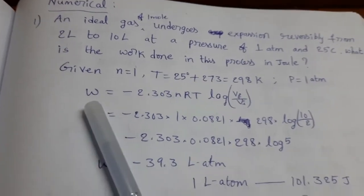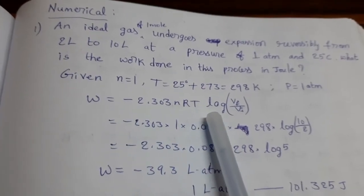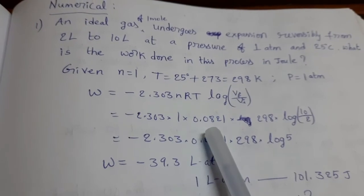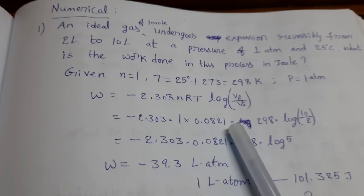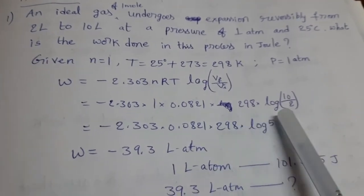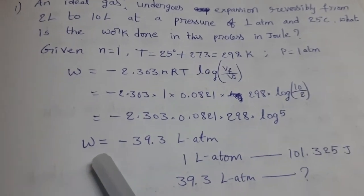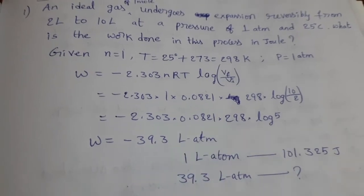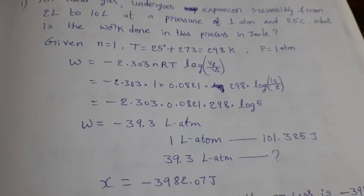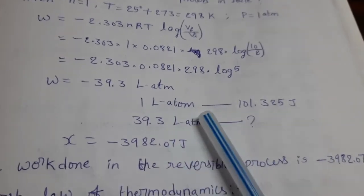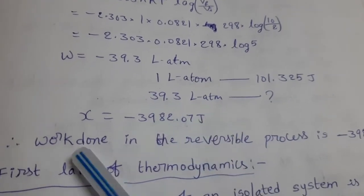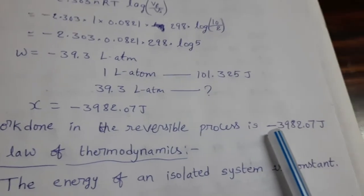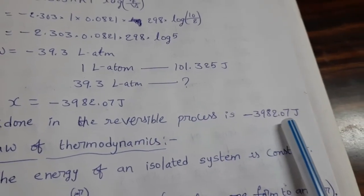The suitable formula for reversible expansion is W equals minus 2.303 nRT log of V2 by V1. Substituting: n equals 1, R equals 0.0821 L·atm·mol⁻¹·K⁻¹, T equals 298 K, log of (10/2). From this, work done equals minus 39.3 liter-atmosphere. The negative value means work is done by the gas because expansion takes place. Converting to Joules using 1 L·atm equals 101.325 J, we get work done equals minus 3982.07 Joules.